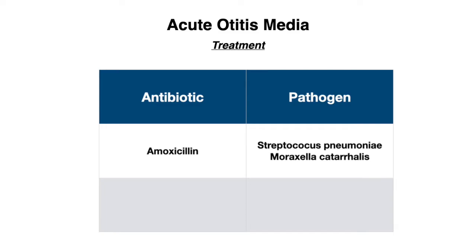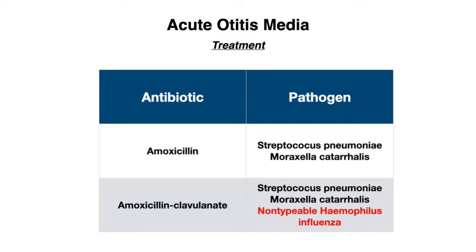With that being said, if there are risk factors for non-typeable H. influenzae, then you need to consider augmentin, because only augmentin is going to cover that pathogen. This is because our beta-lactam antibiotics, which include our penicillins, have limited gram-negative coverage. It's only our extended-spectrum penicillins like augmentin and unasyn that will have that gram-negative coverage.